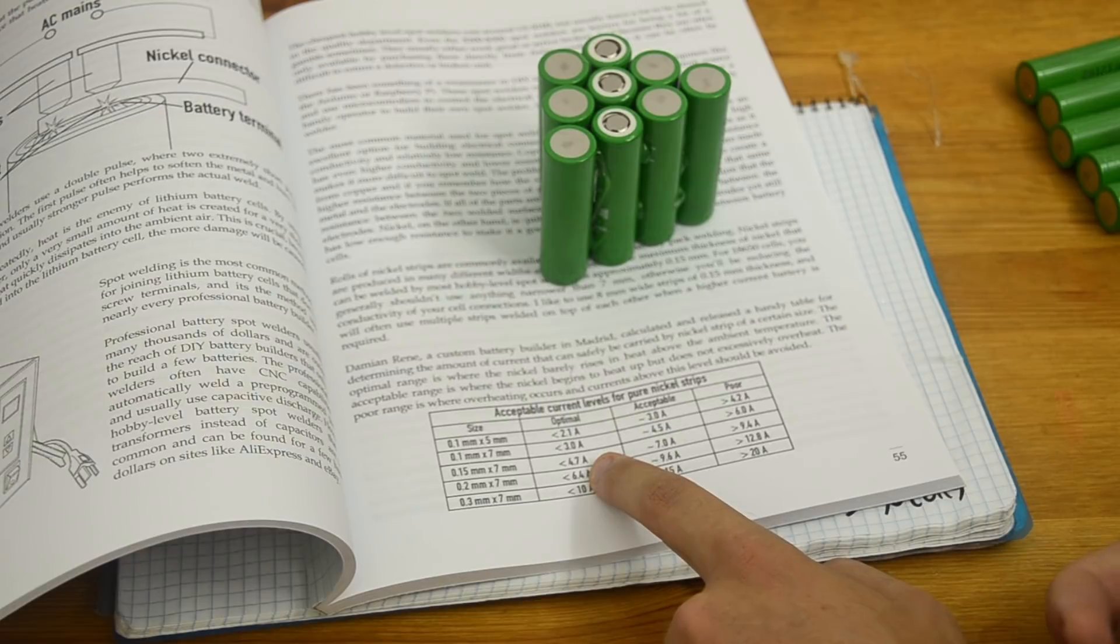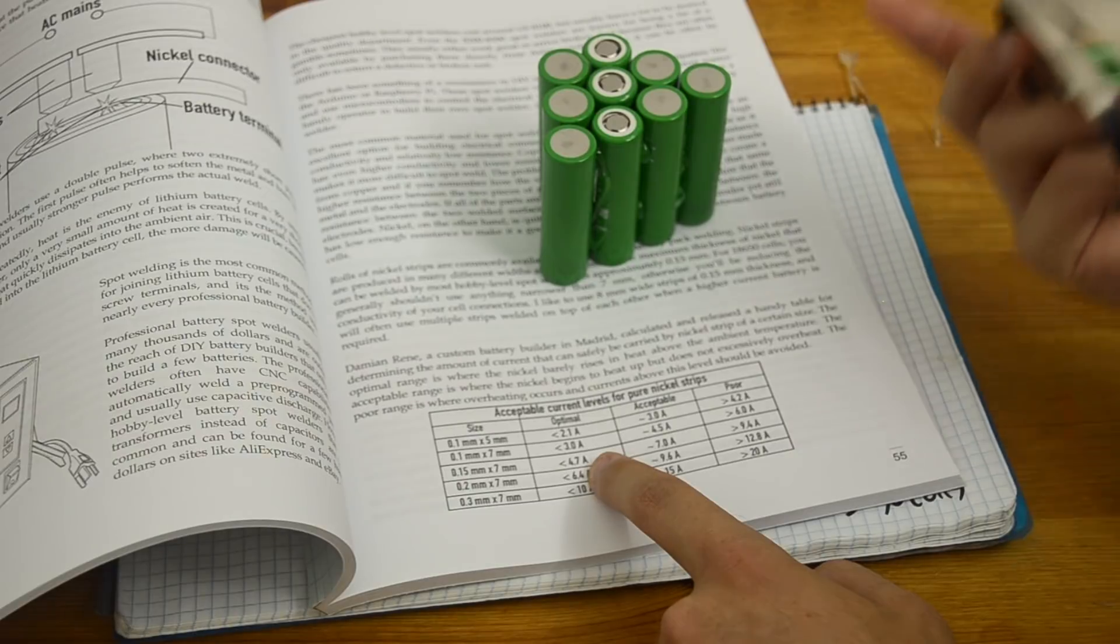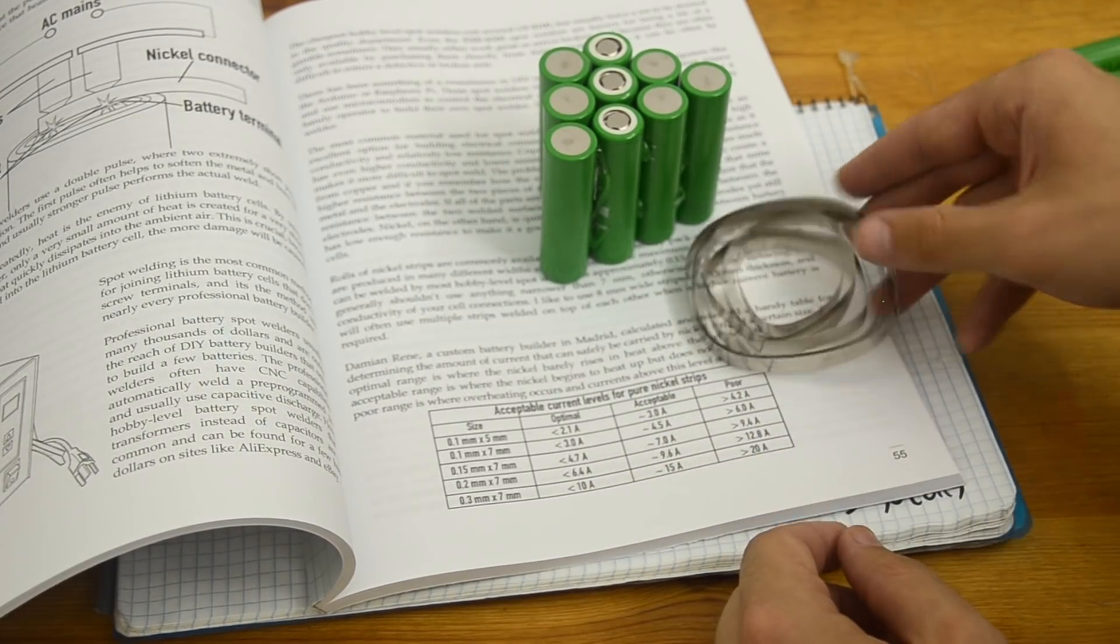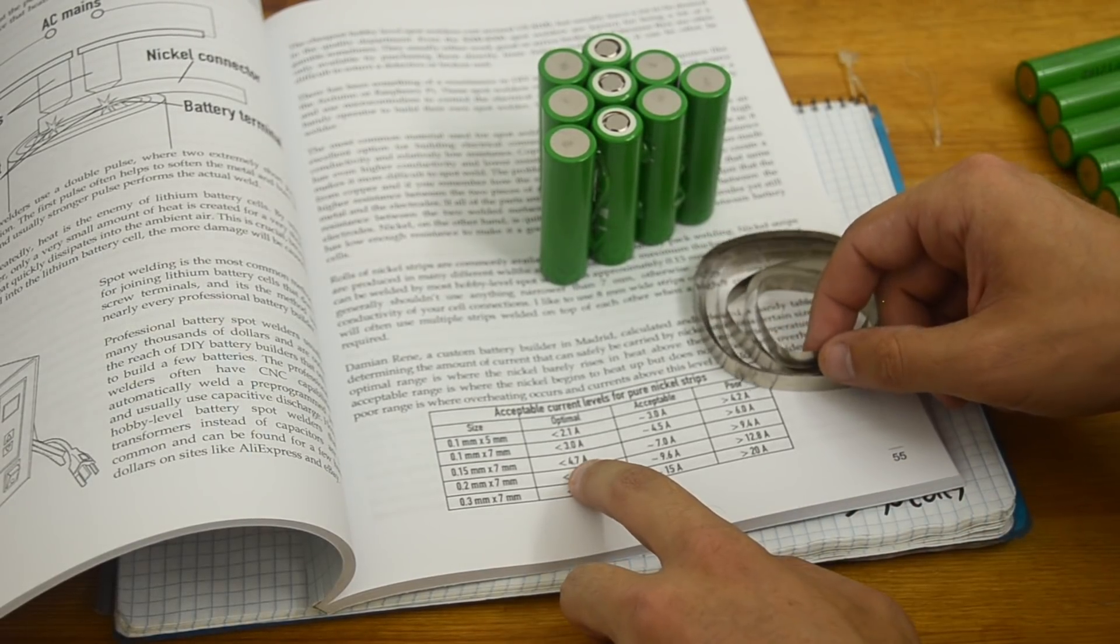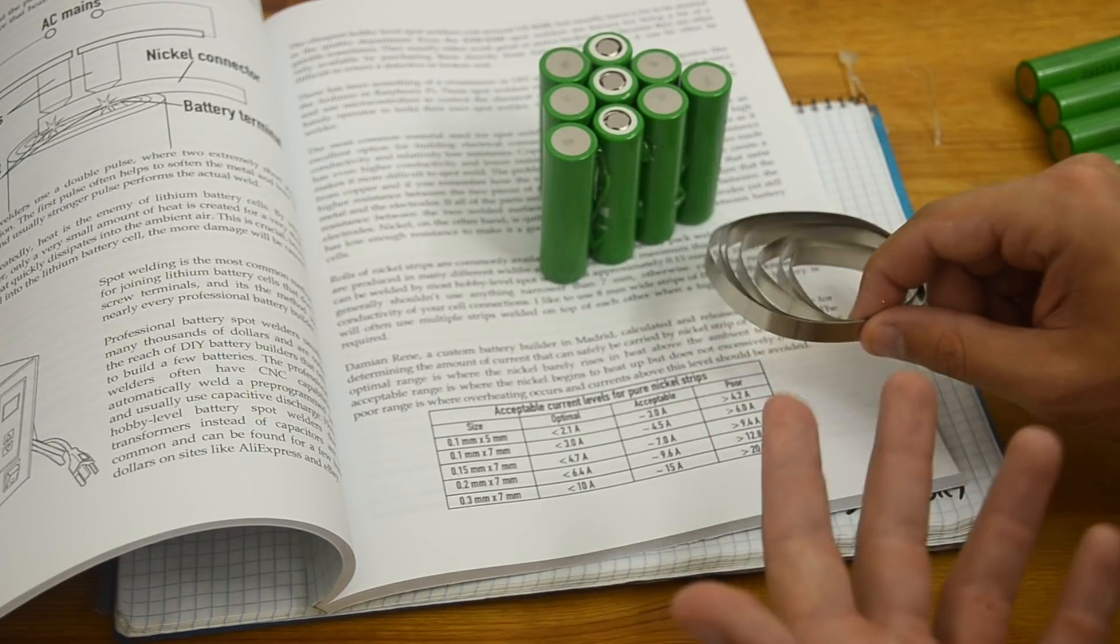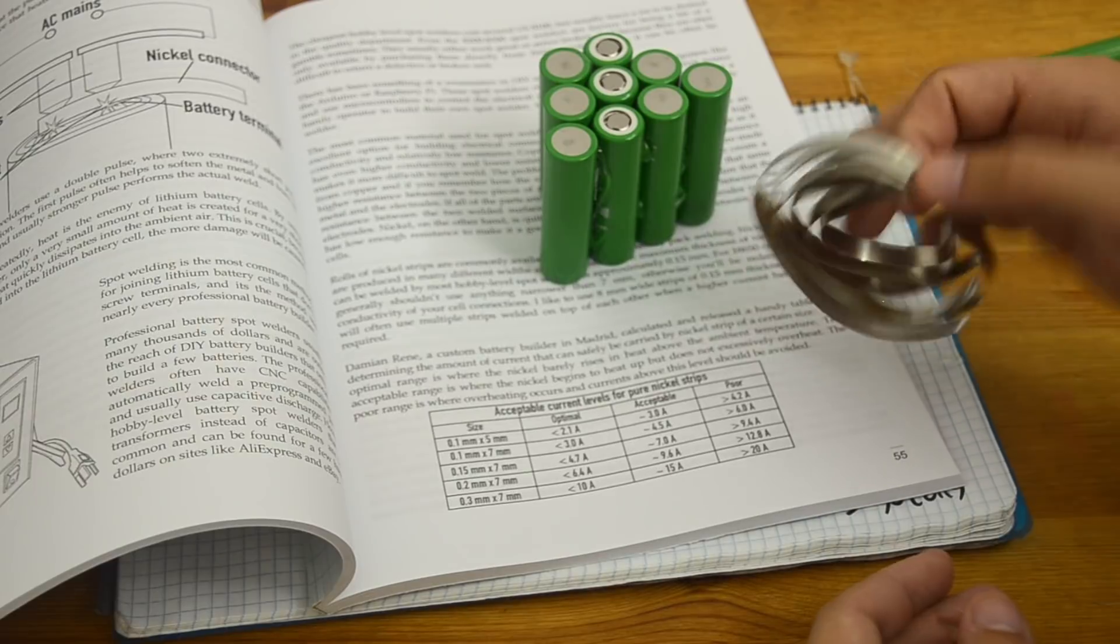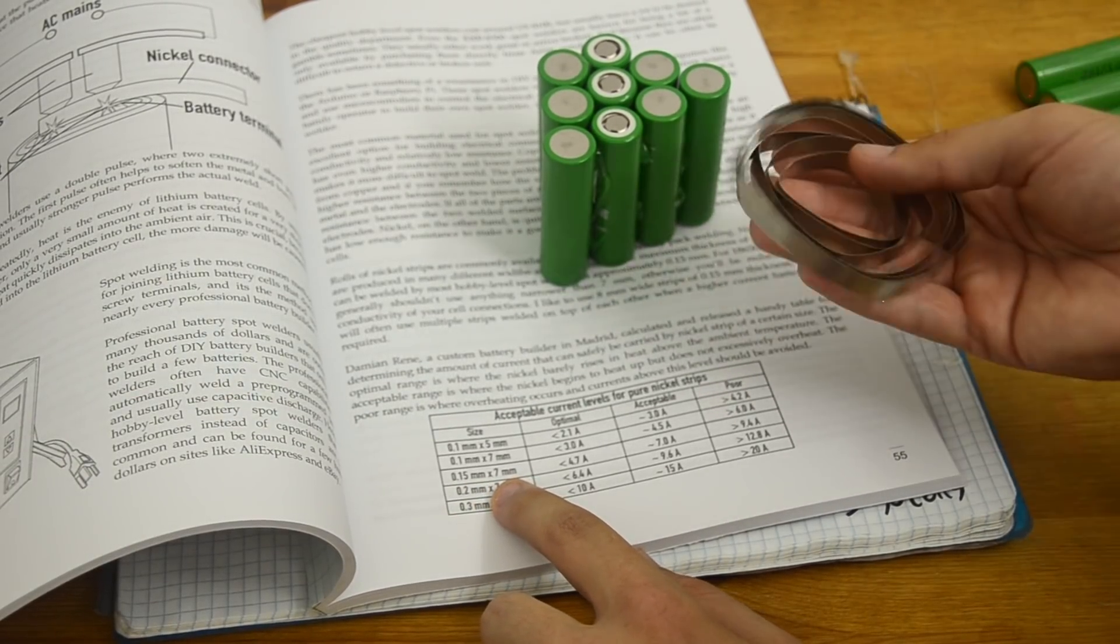So if we're going to pull 5 amps from each cell, then we're going to have 3 cells, each giving 5 amps, giving 15 amps. That means we need 3 connections of nickel, right? Because if we want 3 connections, each one pulling 5 amps, that's 5 times 3 is 15 amps, and that's the amount of amps that my controller is going to pull. So in this case, using this 0.15 millimeter by 7 millimeter nickel, I can use 3 connections here.